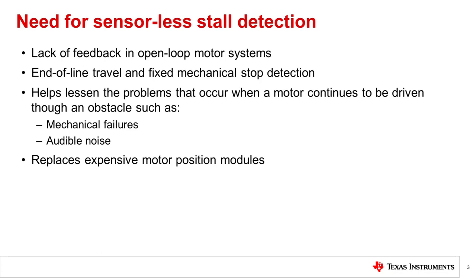The need for sensorless stall detection is due to the lack of feedback in open-loop motor systems, which can make it difficult for the system to know if the motor has stalled. Stall detection allows the system to work in a closed-loop operation, making it possible for the system to determine if the motor is spinning. Additionally, stall detection can be helpful for applications that require sensing when the motor has reached end of line or a fixed mechanical stop.